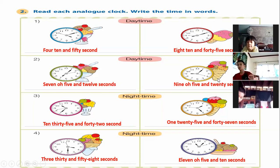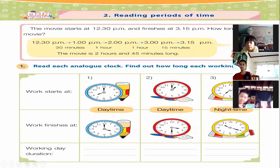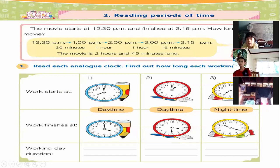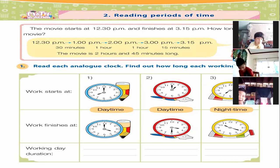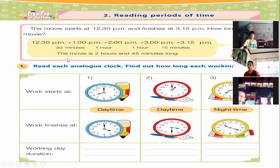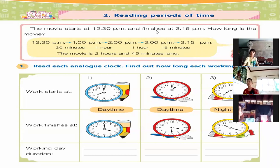Now let's learn how to read periods of time. For example, a movie starts at 12:30 PM and finishes at 3:15 PM. How long is the movie? The starting time is 12:30 PM. We need to calculate the total duration.